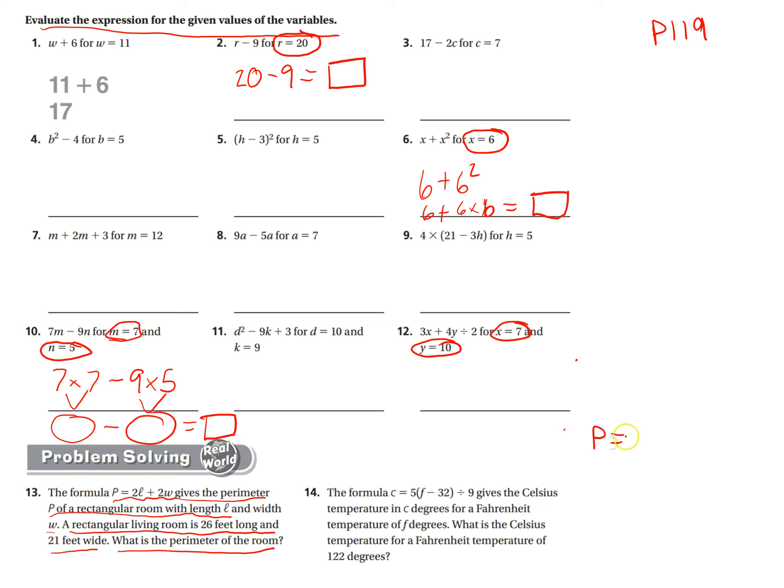So they gave us the formula. Perimeter equals 2 times L. 26 feet long. So times 26. Plus 2 times W. Which W, 21 feet wide. So you're going to get this answer plus this answer. And that will give you your final answer.